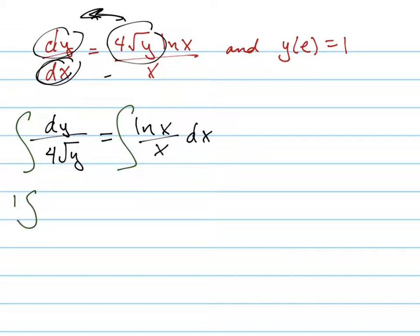So let's rewrite this a little bit. This is one-fourth of y to the negative one-half dy, right? And over on this side, I'm probably going to have to use u substitution.